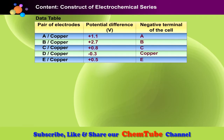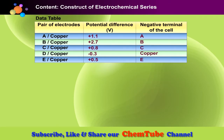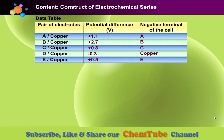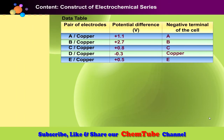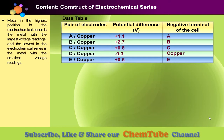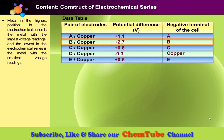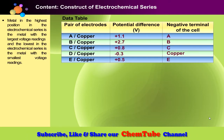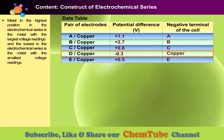How can we construct an electrochemical series based on the potential difference of two metals? Look at the data and construct the electrochemical series based on it. The metal in the highest position in the electrochemical series is the unknown metal with the largest voltage readings, and the lowest in the series is the unknown metal with the smallest voltage readings.